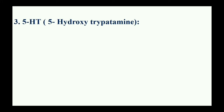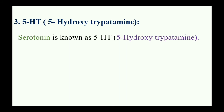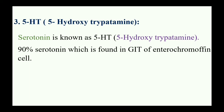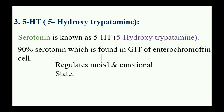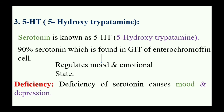Next example: 5-HT, 5-hydroxytryptamine. Serotonin is also known as 5-HT or 5-hydroxytryptamine. 90% of serotonin is found in the GIT in enterochromaffin cells. It regulates mood and emotional state. Deficiency of serotonin causes mood disorders and depression.